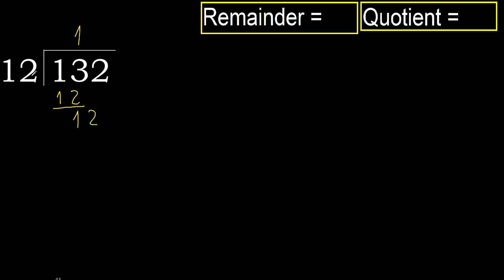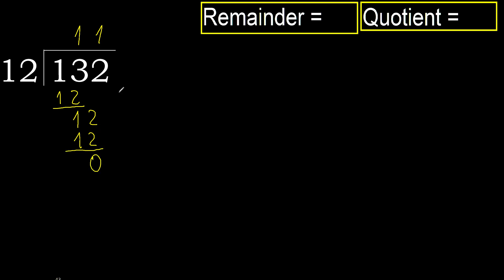12. 12 multiplied by 1 is 12, is not greater. Subtract: 12 minus 12 is 0. Next. That is not a number, therefore finish.